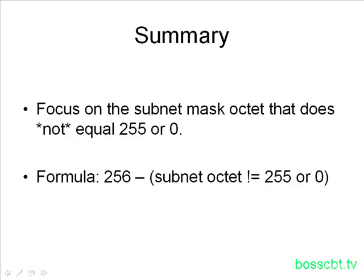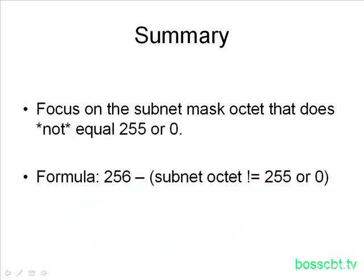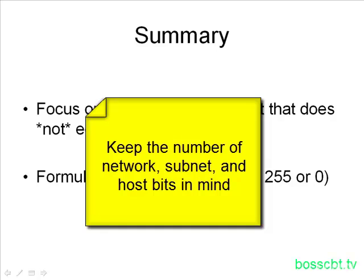To summarize what we covered, the first step is to focus on the new subnet mask that you're going to be using to break down your classful network and just find the octet that doesn't equal 255 or 0. Then all you have to do is use this very simple formula in order to find out your special number. That special number is going to be your multiplier, your multiple. All the subnets then are going to start in multiples of that number. When you start subnetting class A's and class B's, you're likely going to be introducing many subnet bits, so you're going to be creating many different subnets.